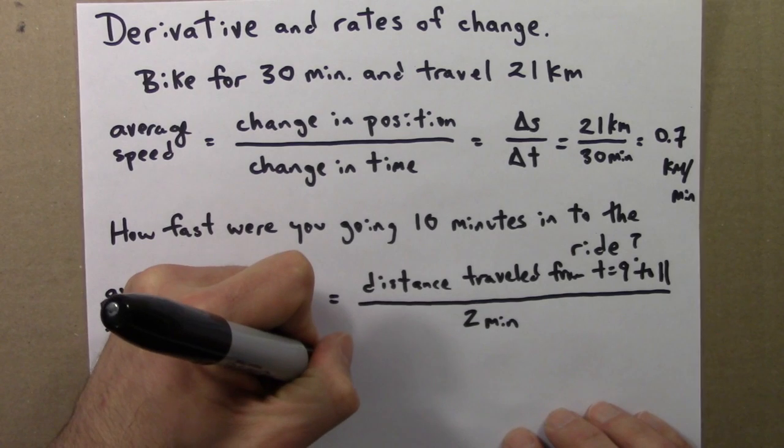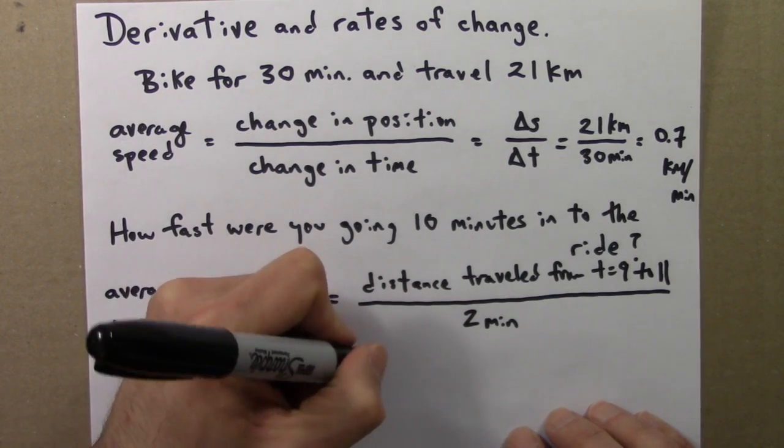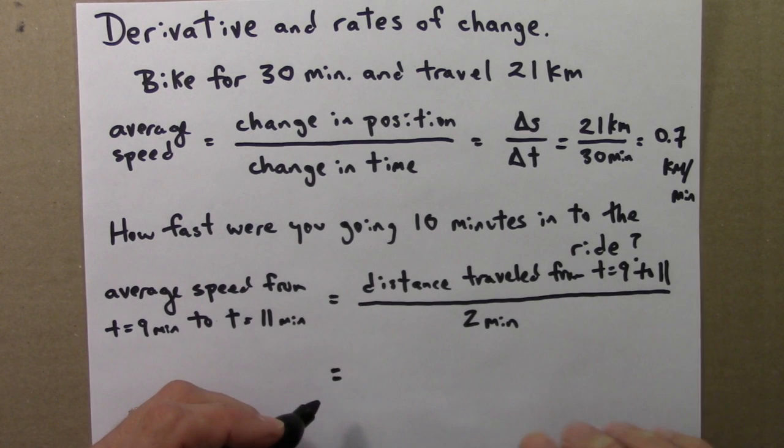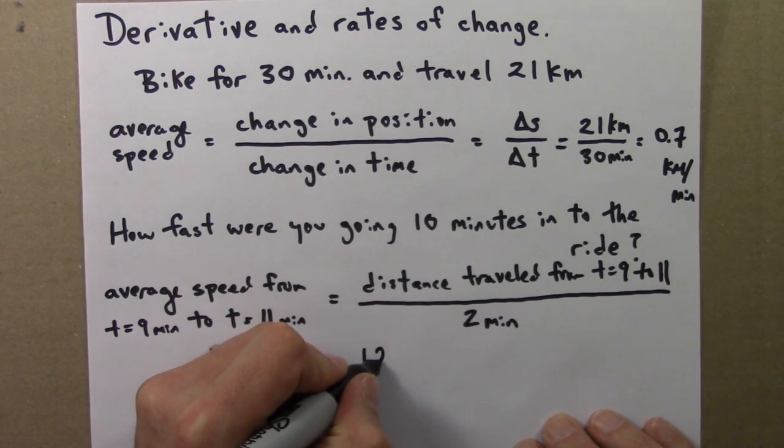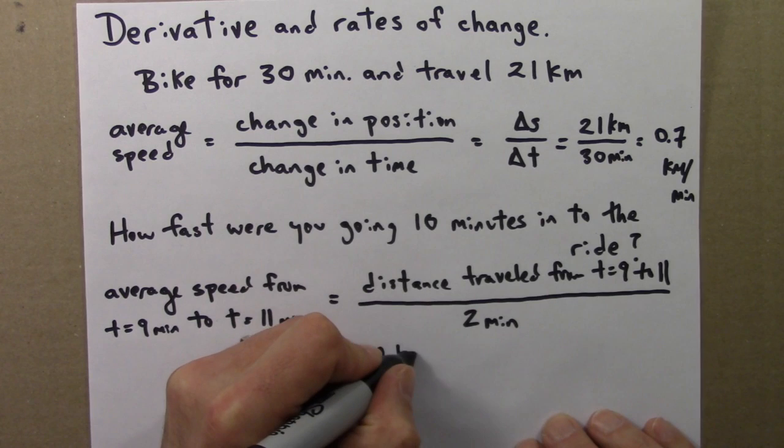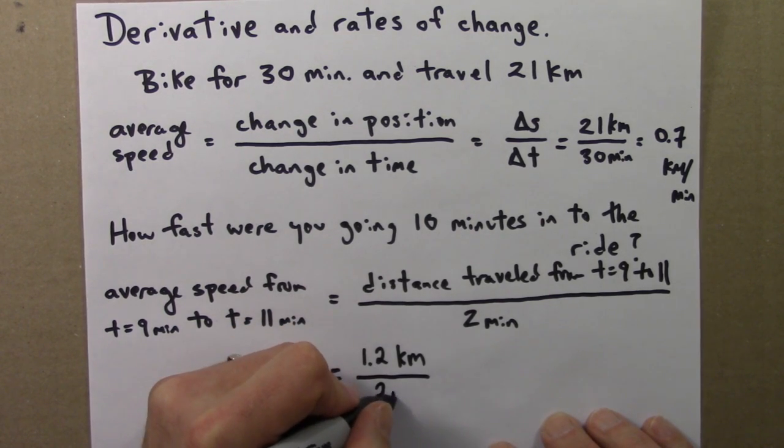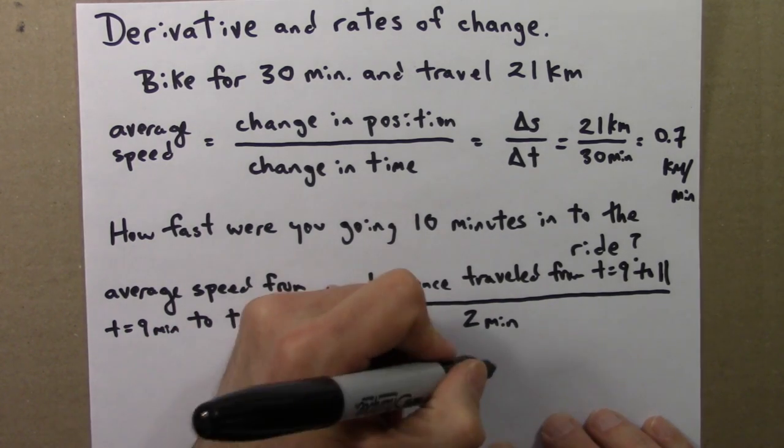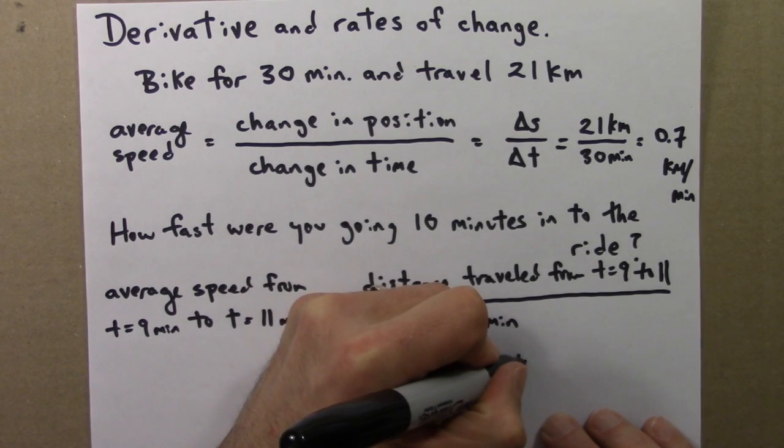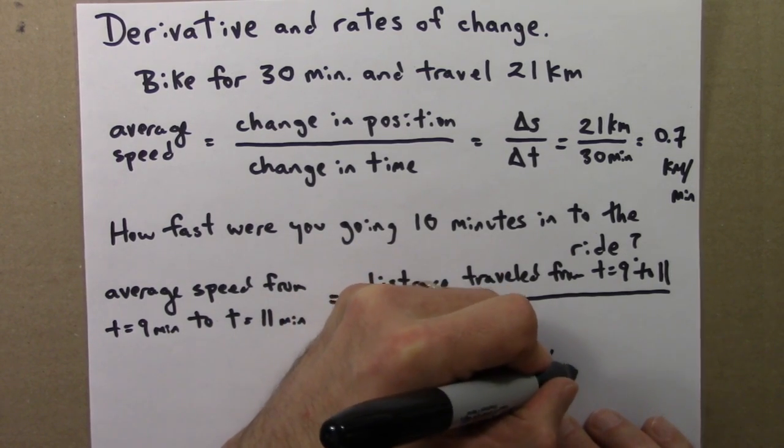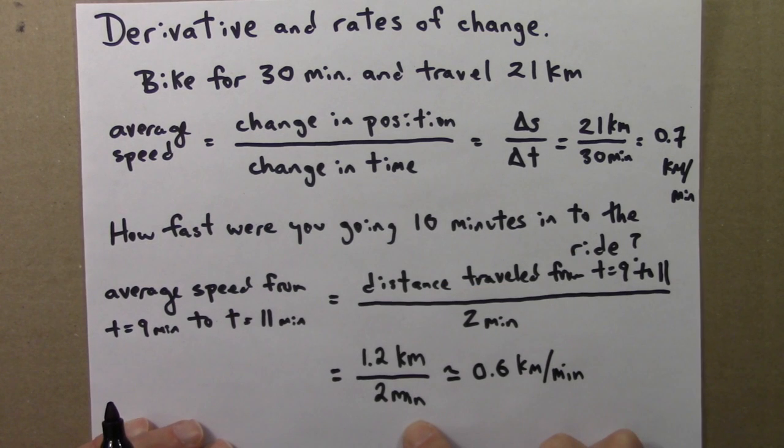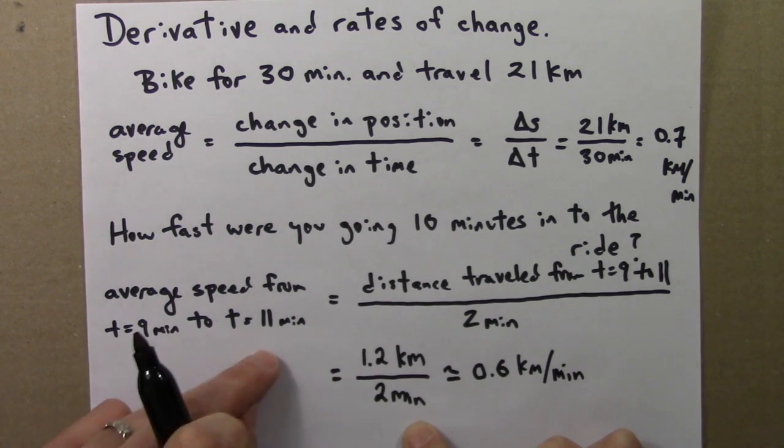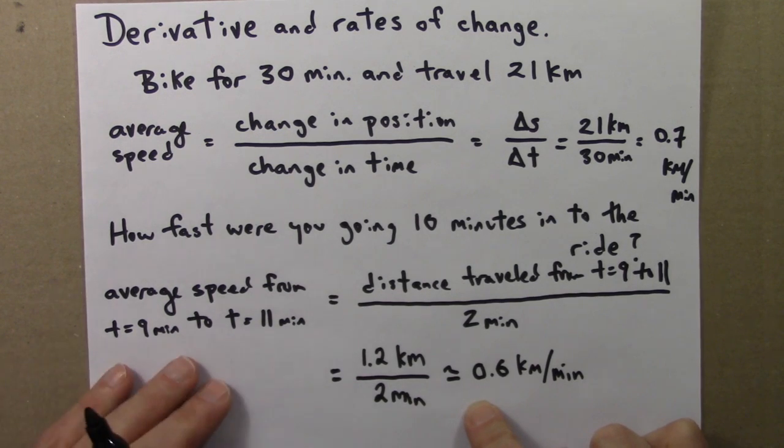So, that could be, and just to make up a number for the sake of concreteness, maybe in those 2 minutes, from t equals 9 to t equals 11 in your journey, let's say you went 1.2 kilometers, divide by 2 minutes. And, let's see, that would be 0.6 kilometers per minute. So, your average speed from t equals 9 to 11 in this case, and I'm just making up these numbers so we have something to talk about, is a little bit less than your average speed. So, you're going a little bit slower than average here.